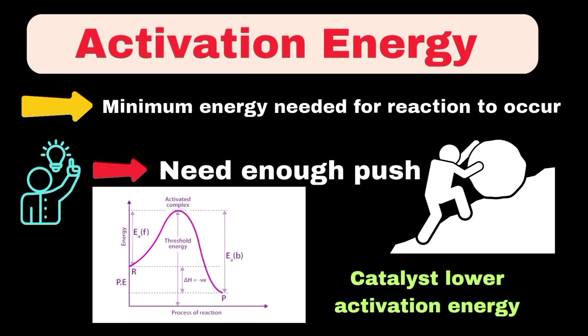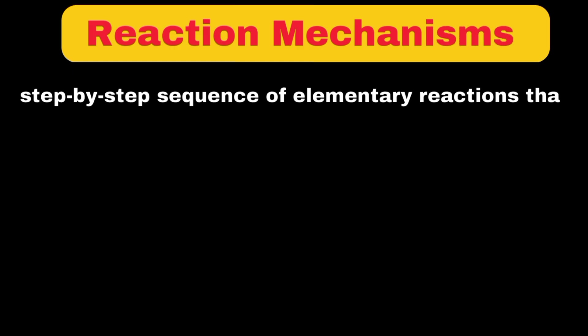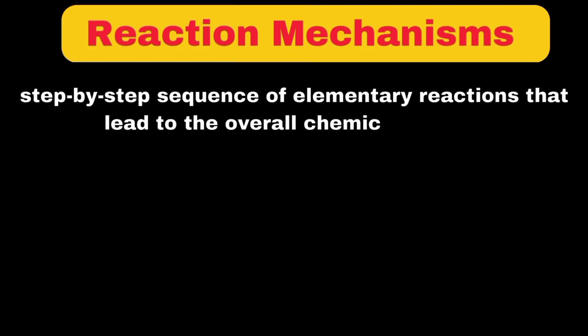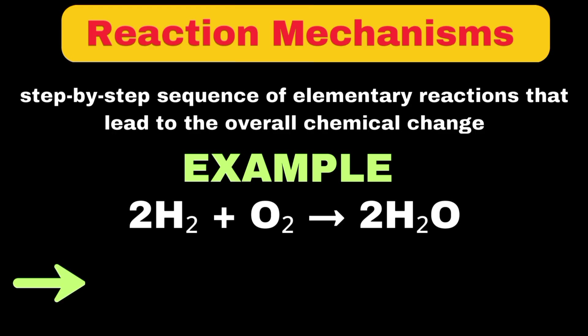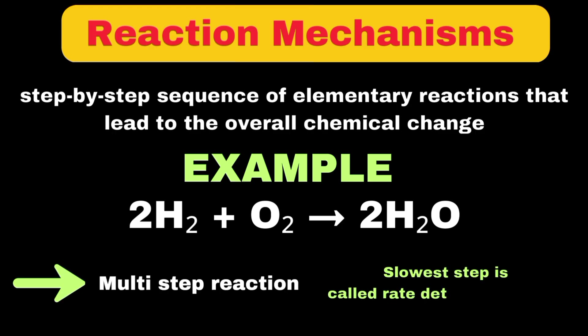Understanding reaction mechanisms is crucial in chemical kinetics. A reaction mechanism can be defined as the step-by-step sequence of elementary reactions that lead to the overall chemical change. Let's look at the formation of water from hydrogen and oxygen. This seemingly simple reaction actually occurs through several steps, with each step having its own rate. The slowest step in this sequence becomes the rate-determining step, controlling the overall reaction speed.